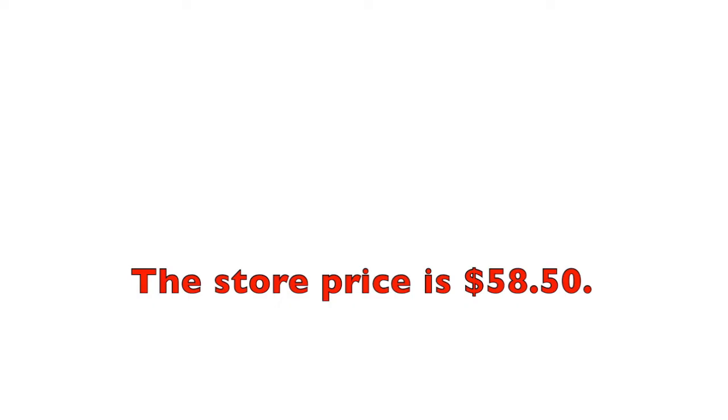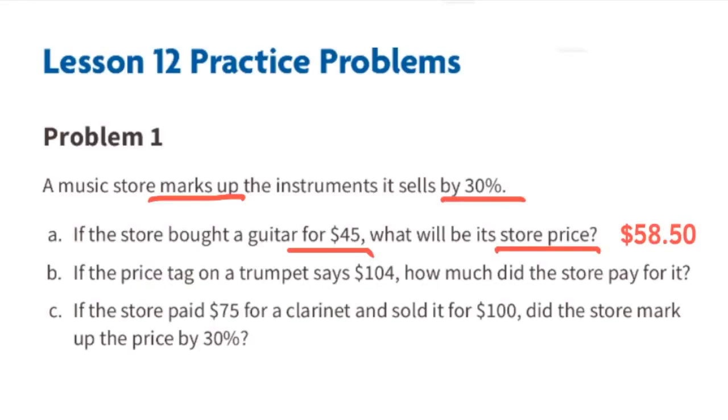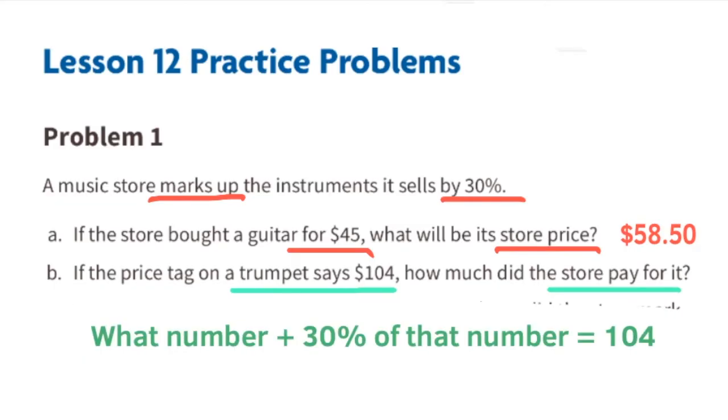Part b: If the price tag on a trumpet says $104, how much did the store pay for it? The price the store paid for the trumpet plus 30% of the price the store paid for the trumpet equals $104. We need to ask: what number plus 30% of that number equals 104? We can write that equation as n plus 0.3n equals 104.